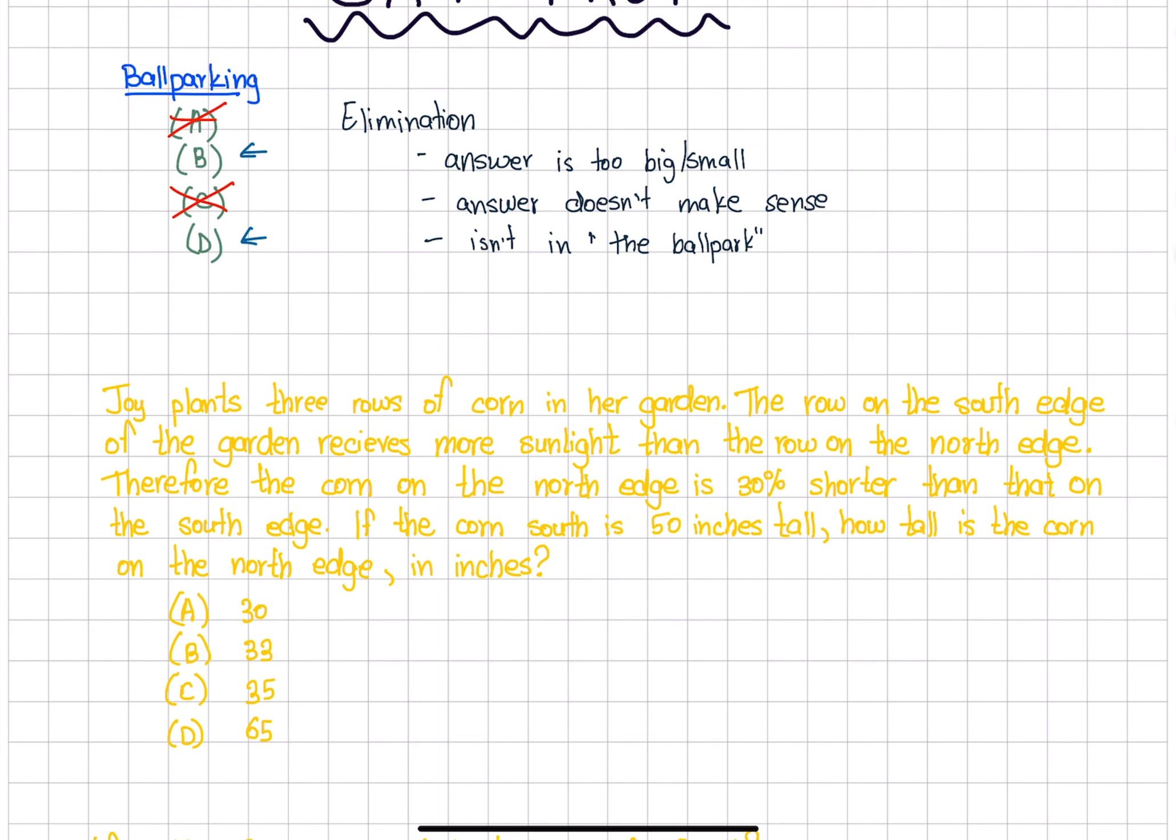Before we start, let's do a quick warm-up. These are sample questions for the SAT. Questions like these may appear in the SAT, so I would advise you to prepare for questions like this. Joy plants three rows of corn in her garden. The row on the south edge of the garden receives more sunlight than the row on the north edge.